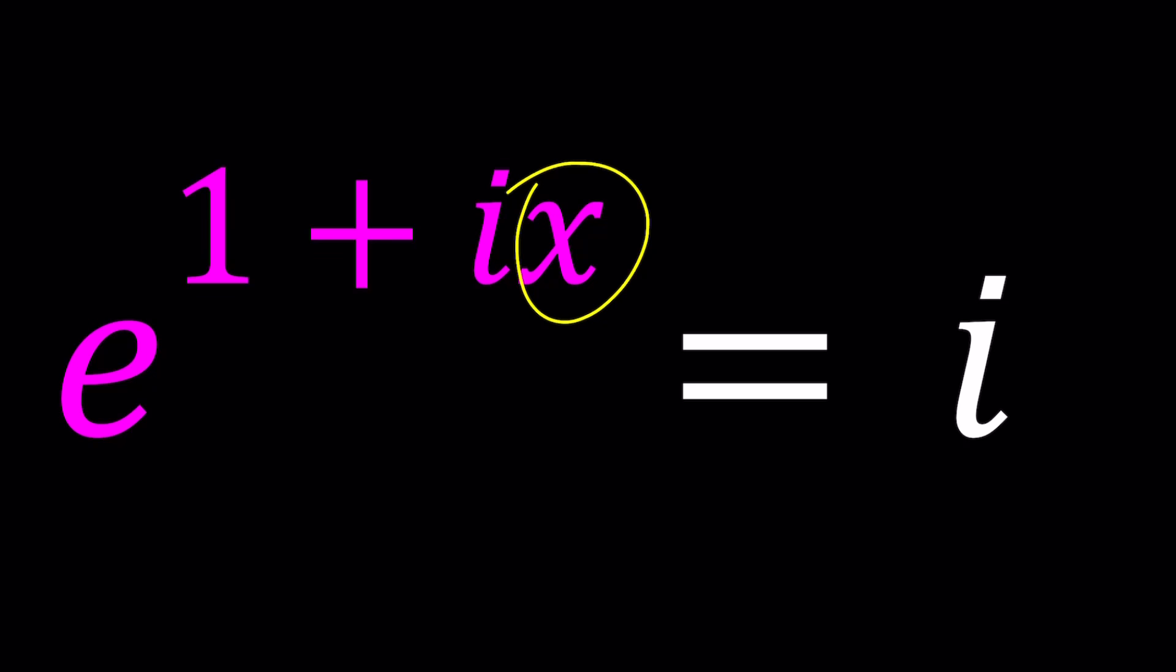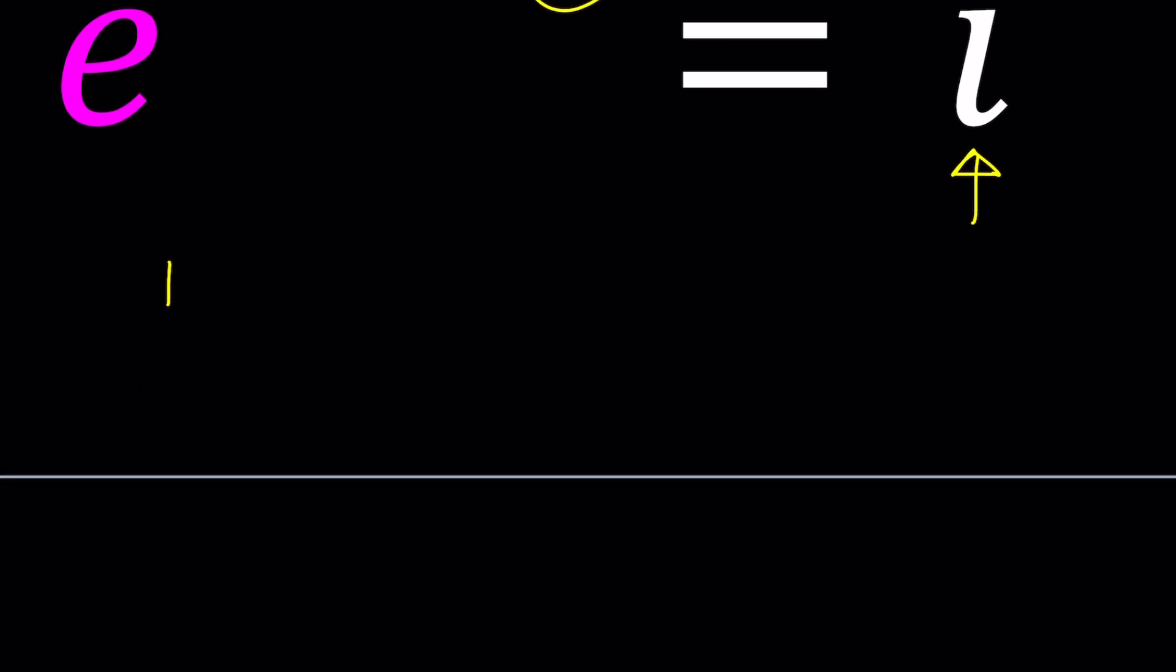We're going to start by writing i in polar form. As you should know, i can be written as 0 plus 1i. In other words, 0 comma 1 basically represents i on the argon plane. So it's just going to appear here, and this is going to be our imaginary axis, this is going to be our real axis.